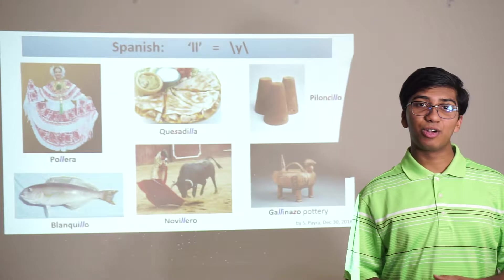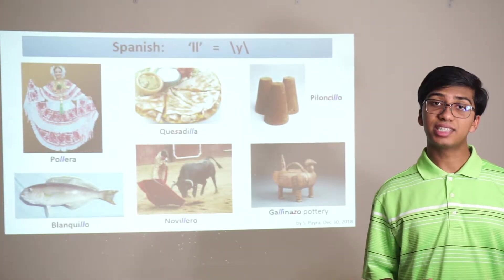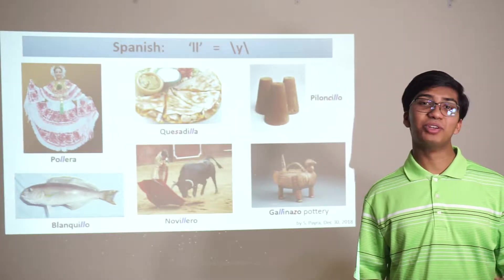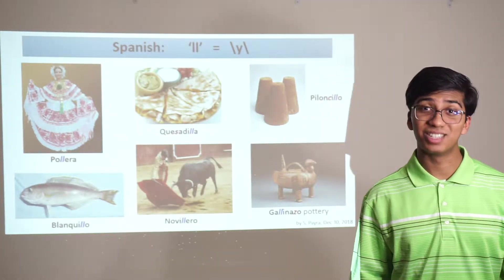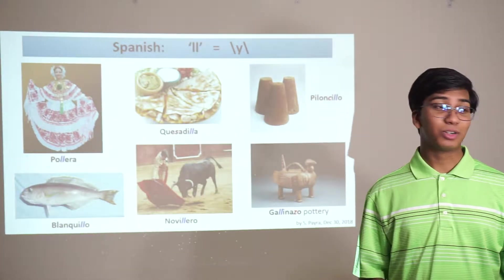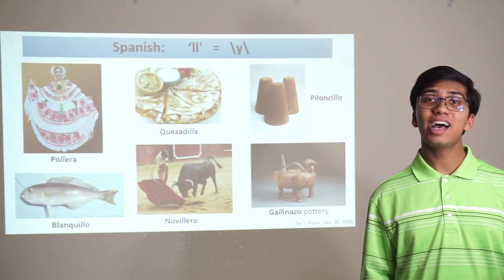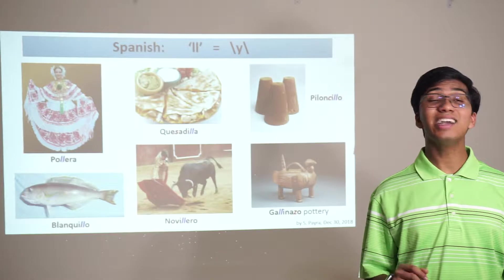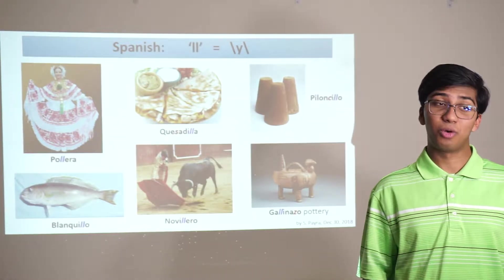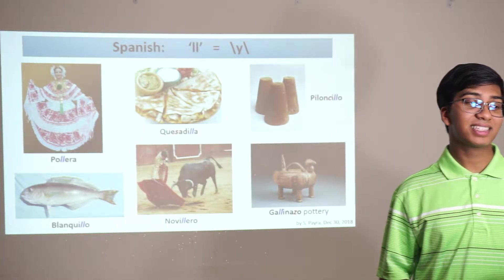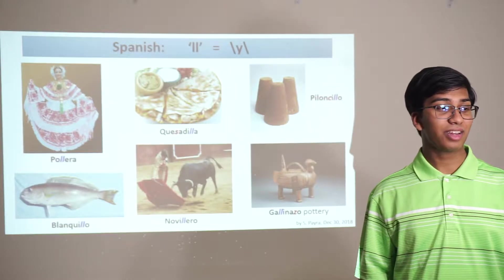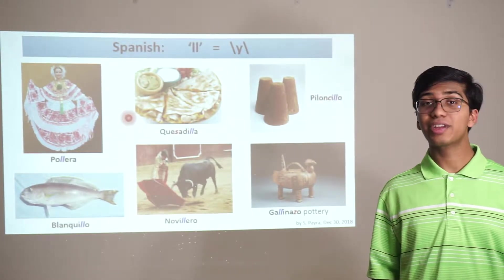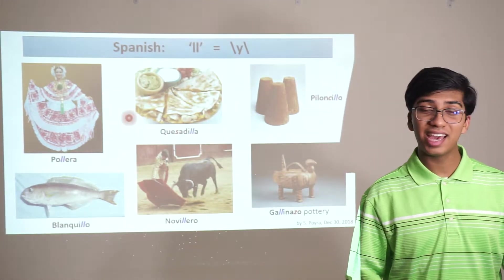The Spanish spelling pattern of turning a Y sound into the letters LL is something you might be familiar with if you've ever encountered tortillas. Tortillas and quesadillas all have an ILLA at the end — that's because ILLA is a diminutive form. Quesadilla, for example, comes from queso, which means cheese. In other cases, you don't have that diminutive at the end; the LL appears somewhere in the middle of a word.